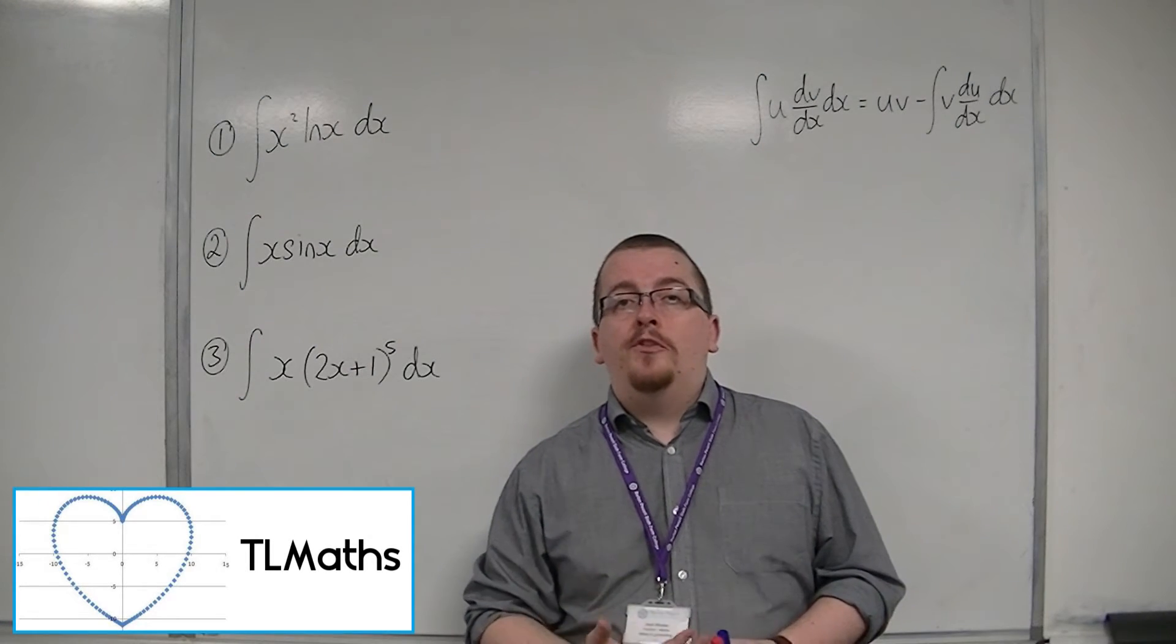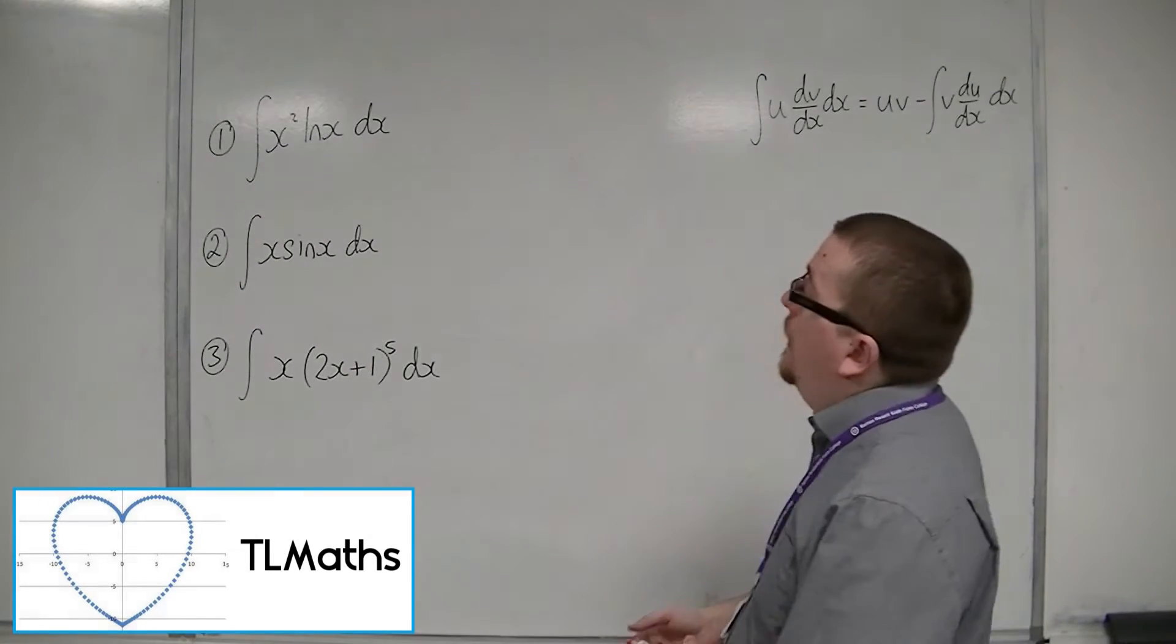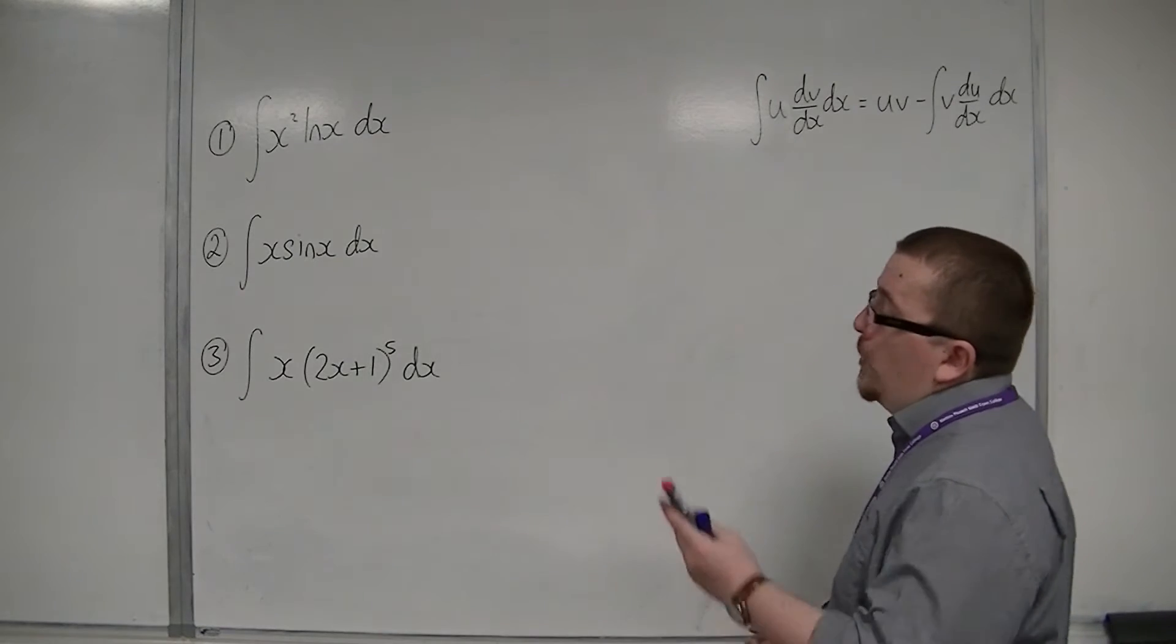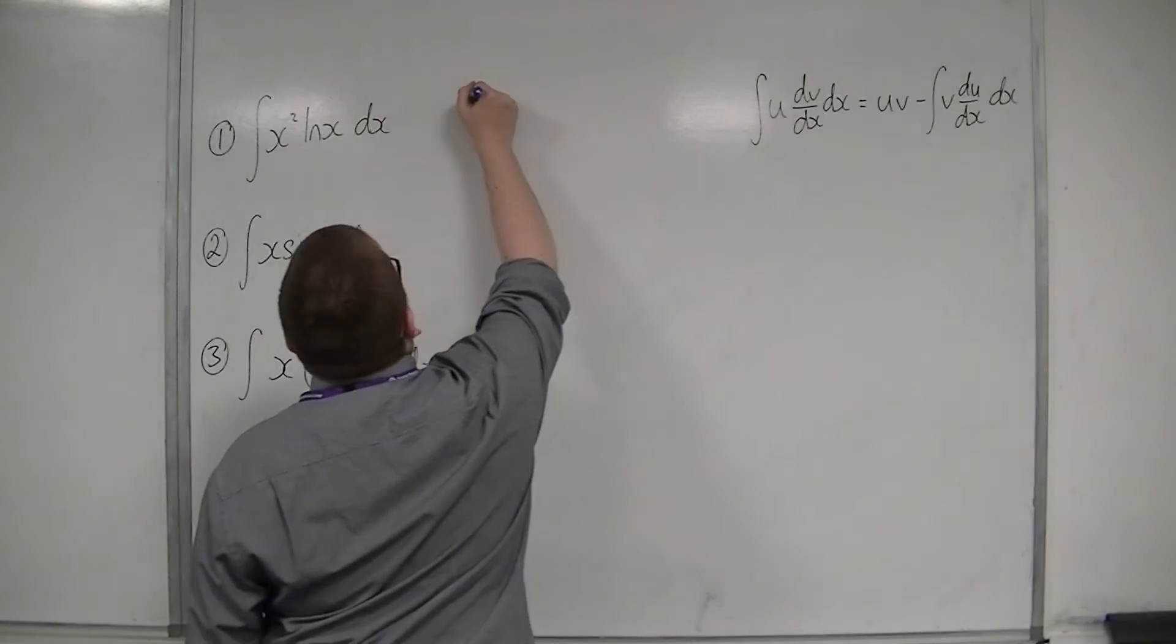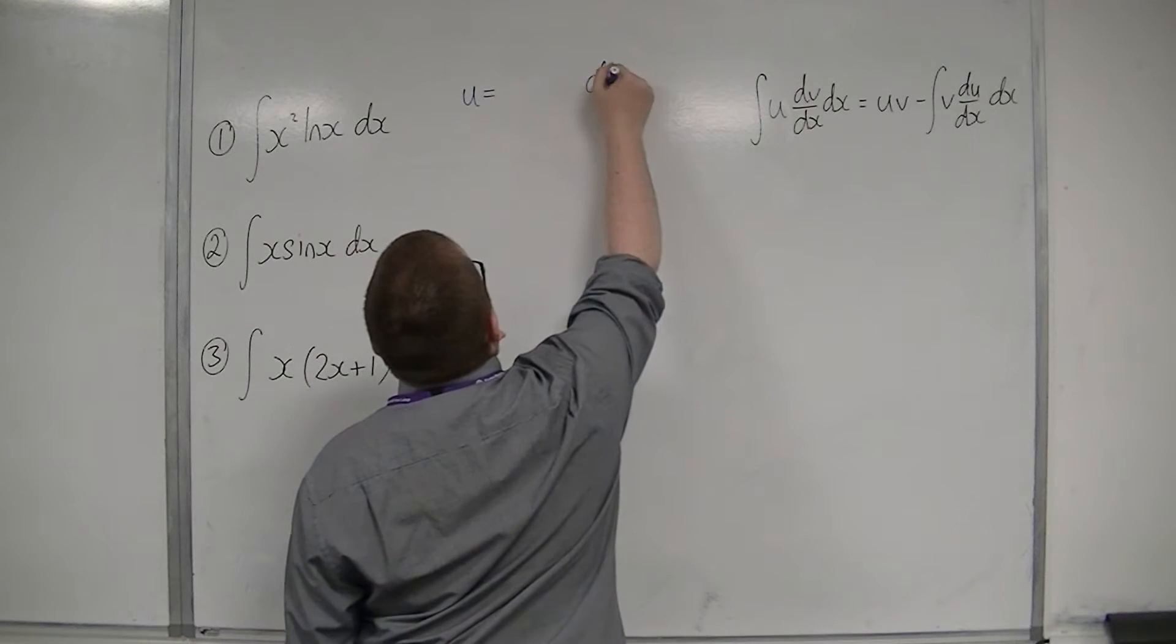Let's look at some examples of using integration by parts. We're going to start off with x squared log x. So we need to pick a u and a dv by dx.